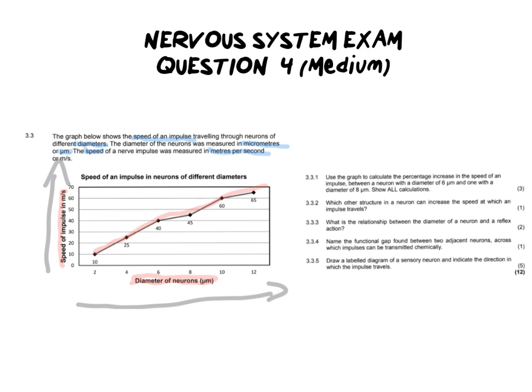Looking into our first question it says use the graph to calculate the percentage increase in the speed of an impulse between a neuron of six micrometers and one with eight micrometers and you need to show all your calculations. To calculate percentage increase what we need to do is take our two numbers off of the graph. We're going to go to six micrometers which is 40 and then at eight which is 45. We're going to take the bigger number and minus the smaller number from that. That should give us five.